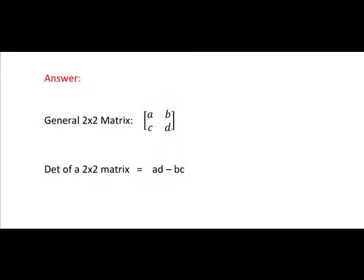If we look at a general matrix, it is generally represented using A, B, C and D. So to get the determinant of such a matrix, we multiply A by D and take away B by C.